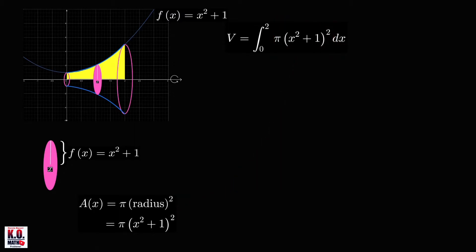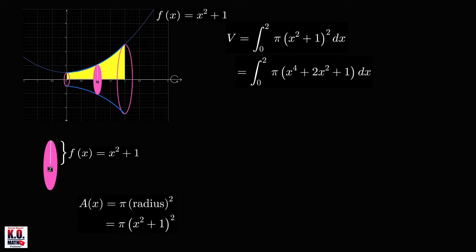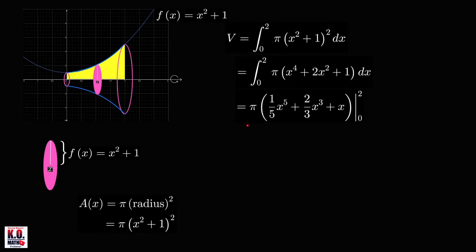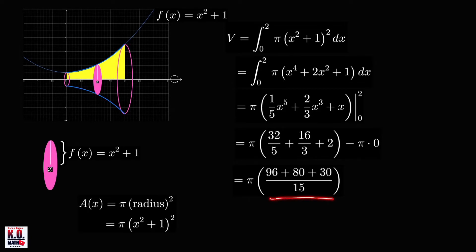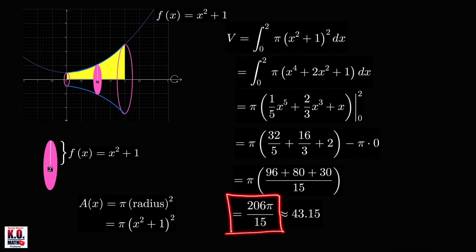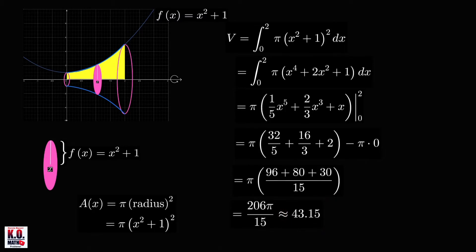To evaluate this integral, we first expand x squared plus 1, quantity squared, and apply the power rule to get an antiderivative evaluated from 0 to 2. Plugging in x = 2 and subtracting the value at x = 0, this sum equals 96 plus 80 plus 30, all over 15. The exact answer is 206 pi over 15, approximately 43.15. This is the volume of the solid of revolution.